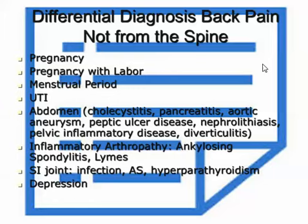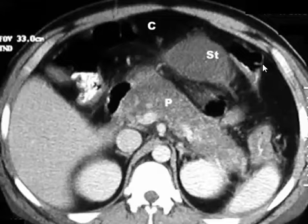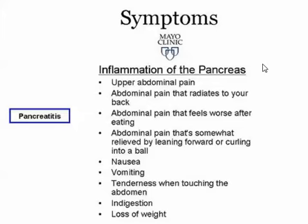The differential diagnosis of back pain includes: pregnancy and labor, menstrual pain, urinary tract infection, cholecystitis, pancreatitis, and aortic aneurysm. On a CAT scan of the abdomen, the pancreas marked with a 'P' can be seen inflamed and irregular — pancreatitis is a cause of low back pain.